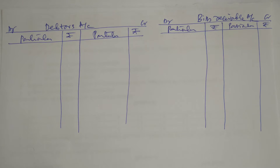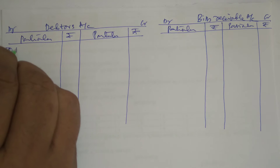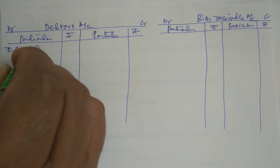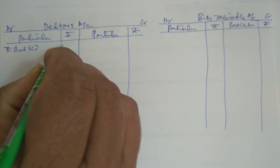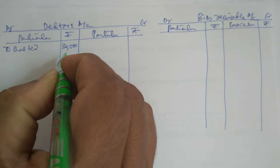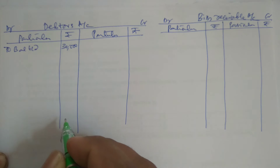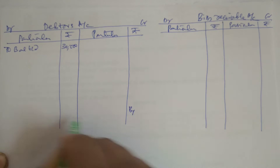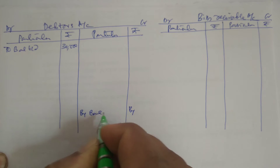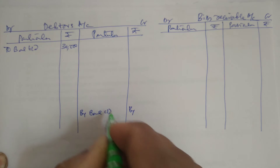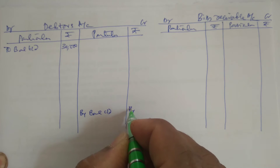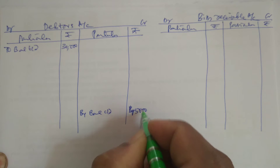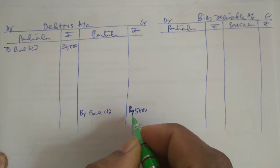Debtors as on 1-1-2010 is given as Rs. 30,000 — it is the opening balance, so to balance brought down it is 30,000. And debtors as on 31-12-2010, by balance carried down, the amount is given as 45,000. So 45,000 is taken as the closing balance.